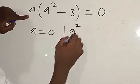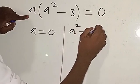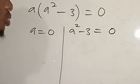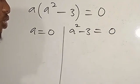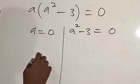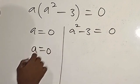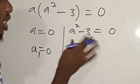And a² - 3 will also equal zero. We've already gotten a to be zero, that is a₁. Now here...